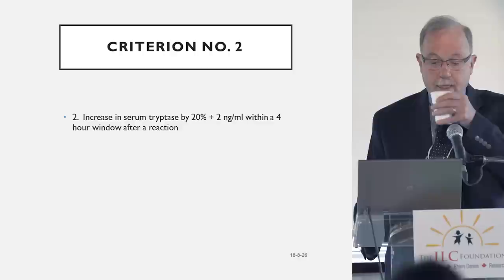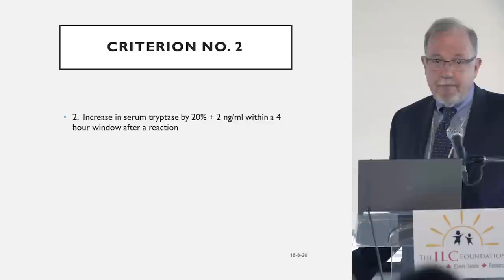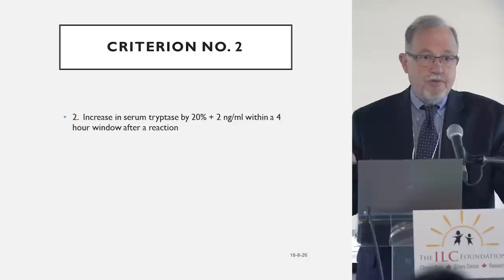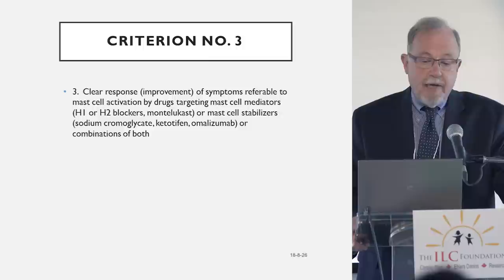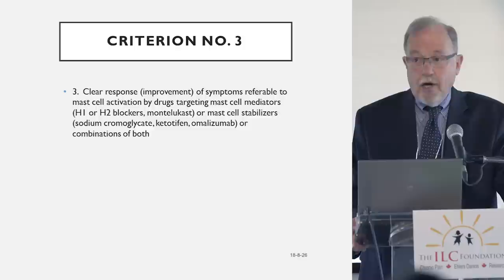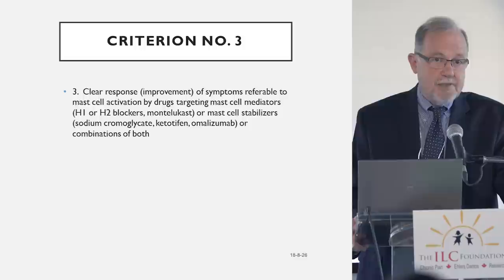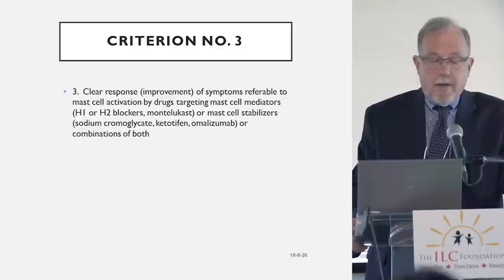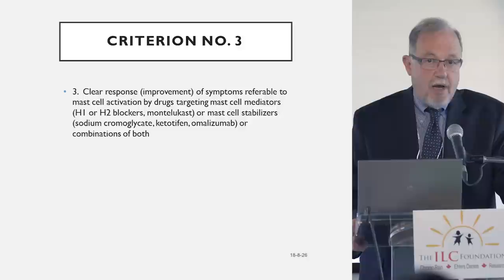The second criterion is to demonstrate an elevated marker of mast cell activation — that elevation in tryptase when somebody is highly symptomatic. Criterion number three is to demonstrate a good therapeutic response to medications that interfere with chemicals released from mast cells, or a good therapeutic response to chemicals that block mast cells from releasing chemicals — mast cell stabilizers.